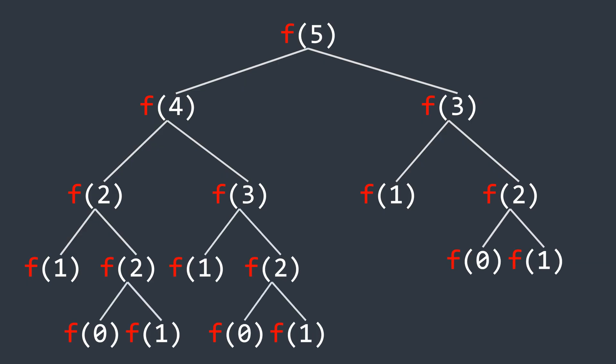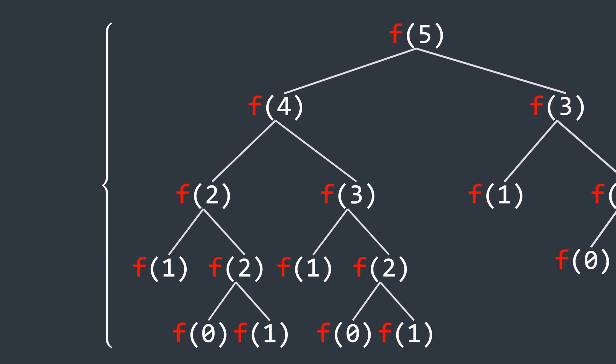The same calculations are repeated multiple times. For example, f of 3 and f of 2 are computed again and again in different branches of the tree. This redundancy is the reason why our naive recursive code is so slow. Instead of using previously computed results, it recalculates them unnecessarily leading to an exponential time complexity.